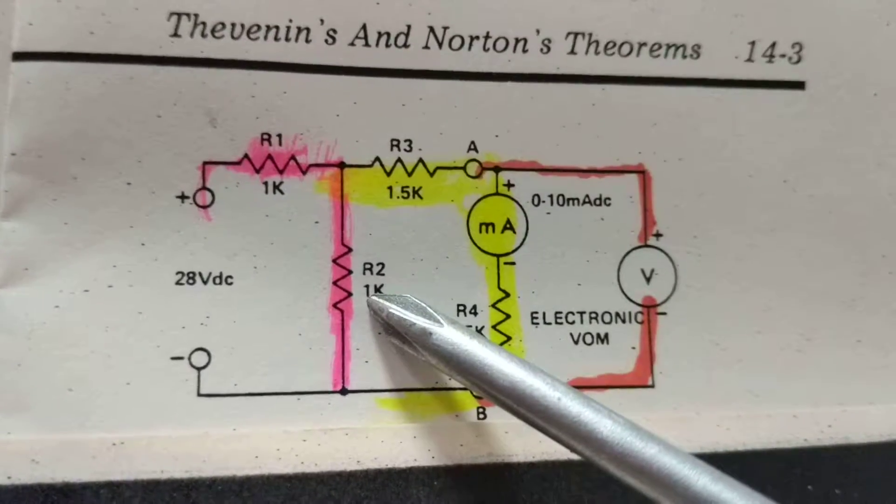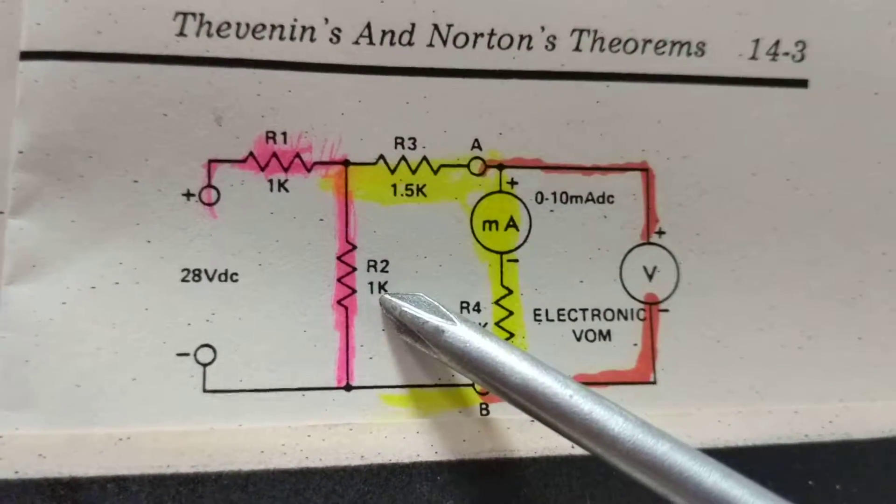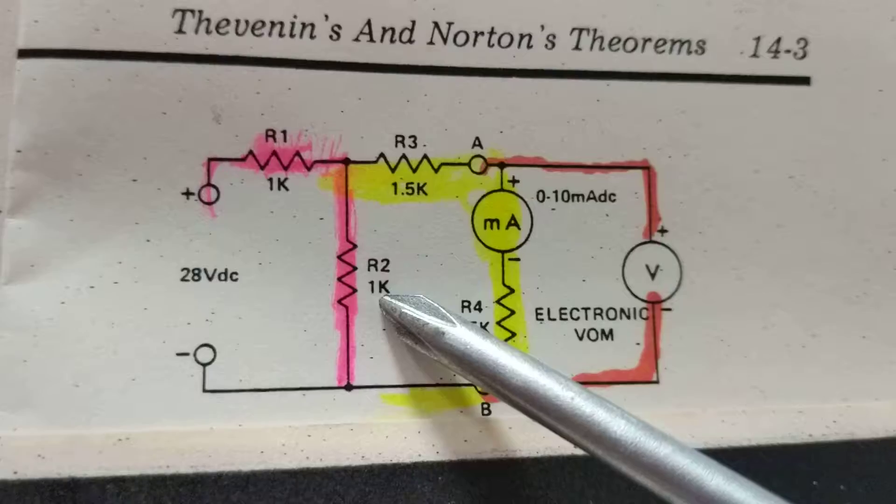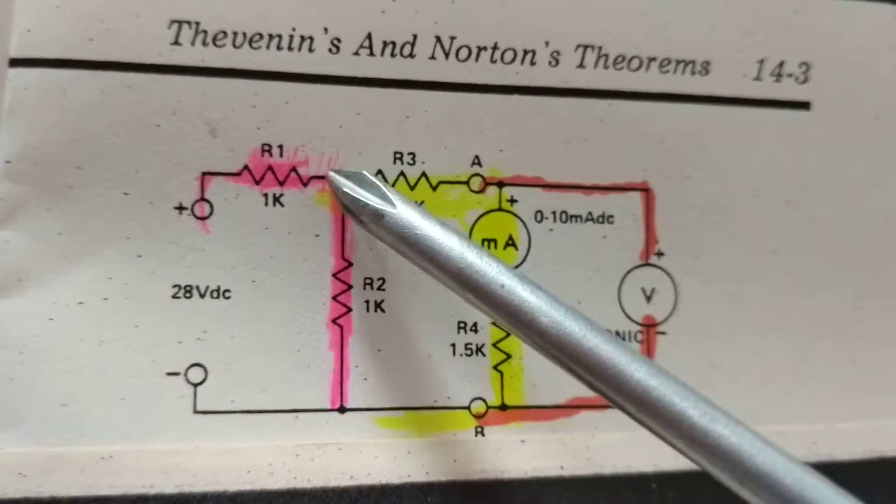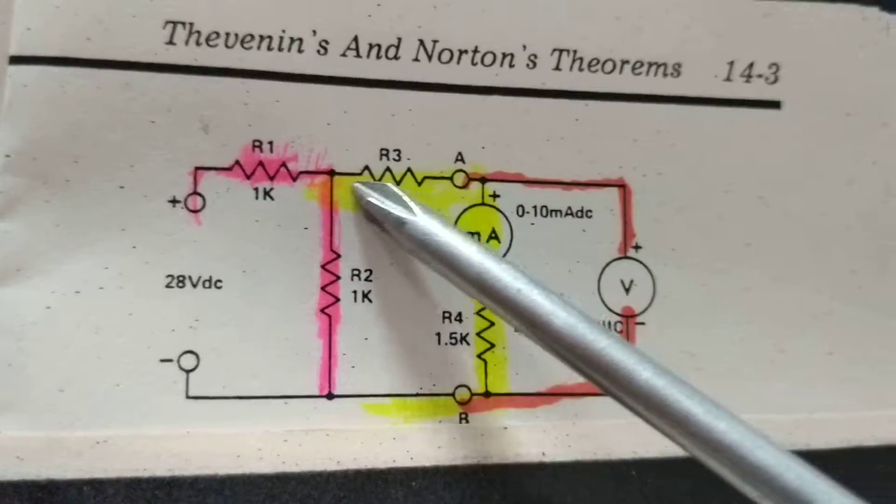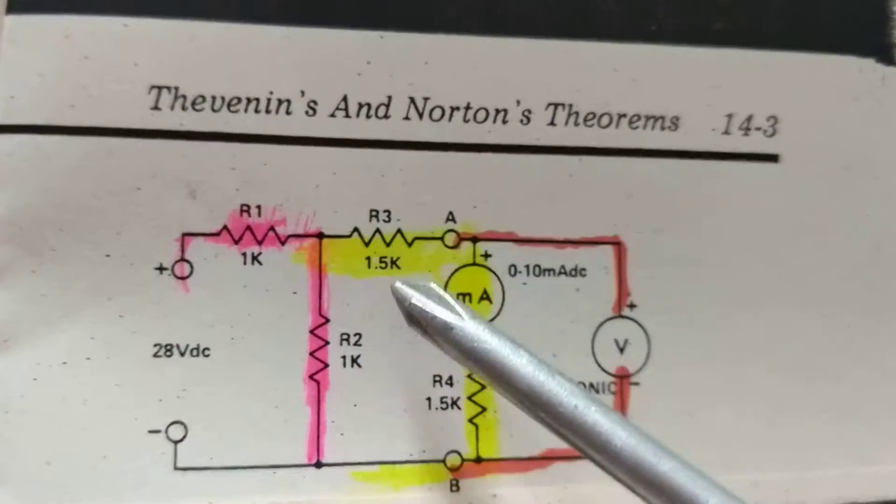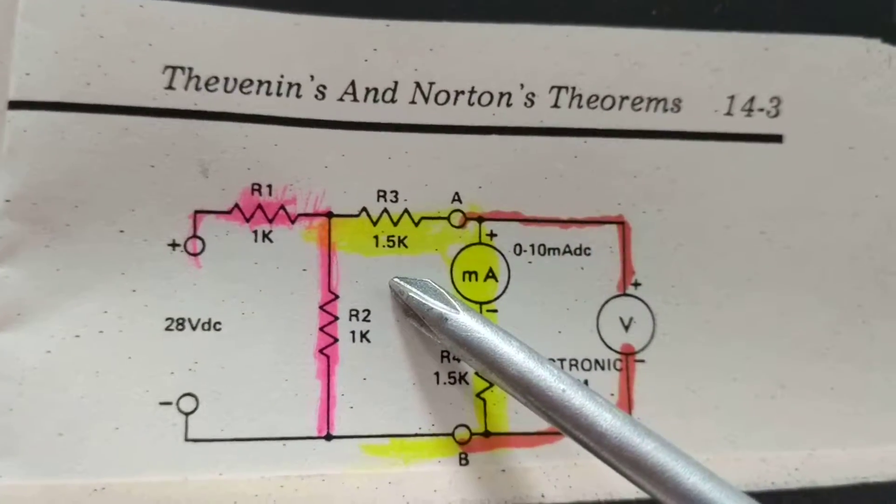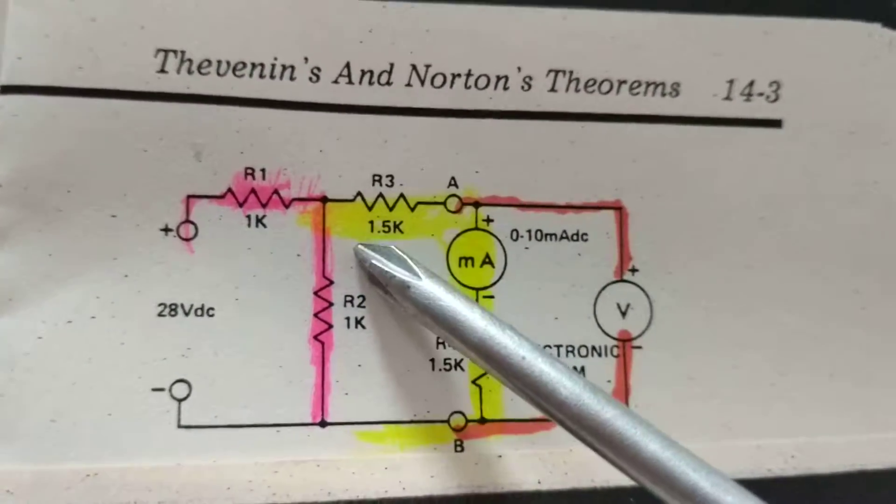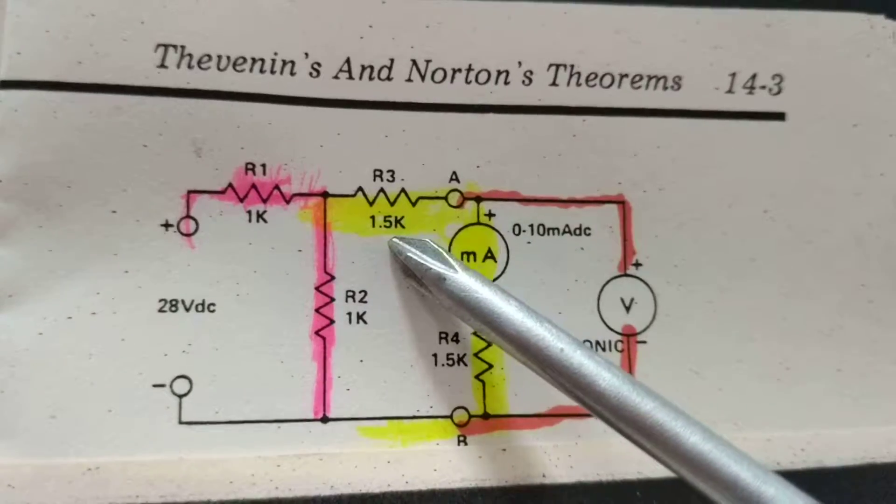The value of R2 is 1K. At the same time, this point which goes to R1 and R2 is also connected to R3. The value of that one is 1.5K. K means a thousand, so this will be 1500 if you move the decimal point.